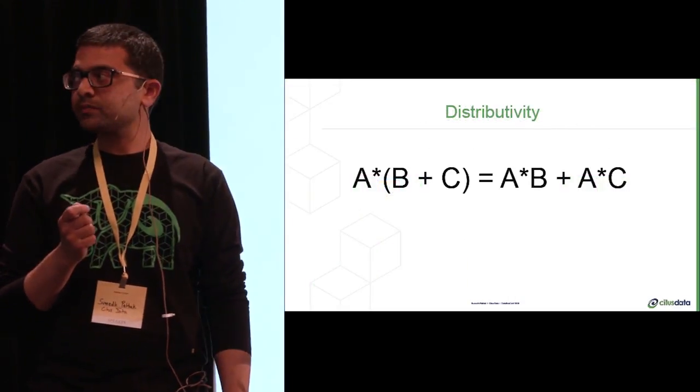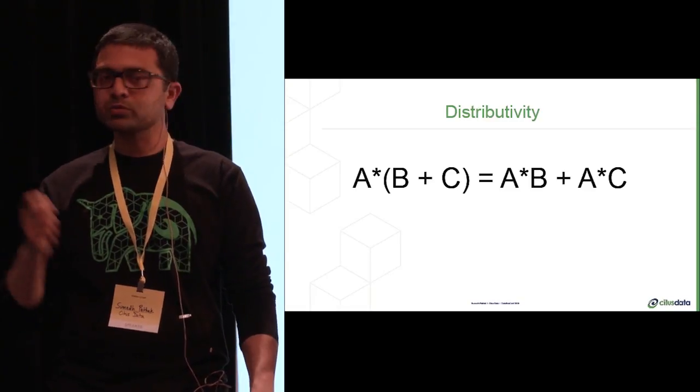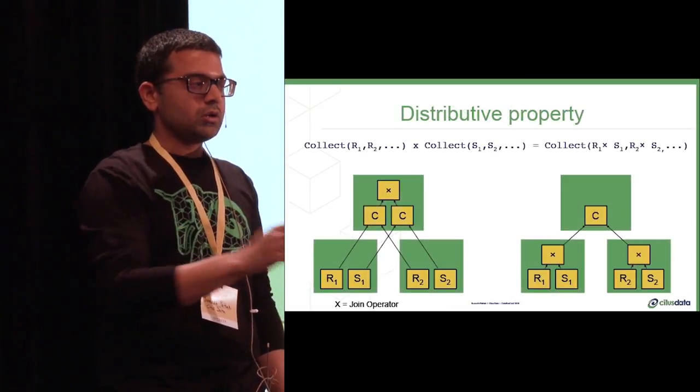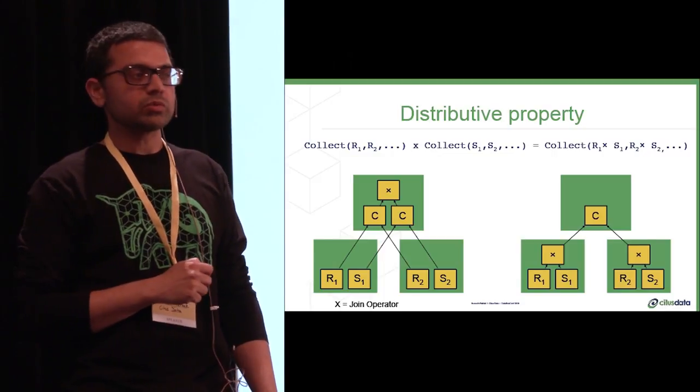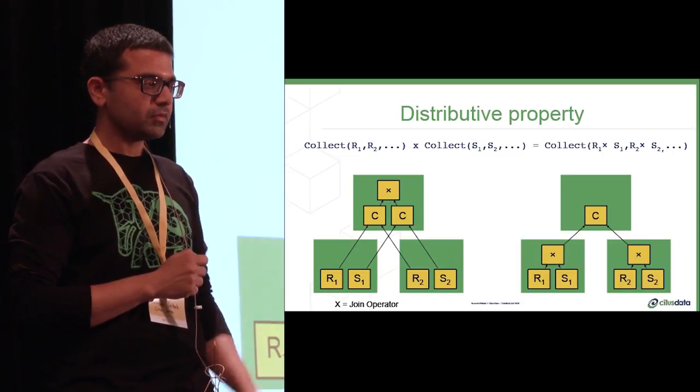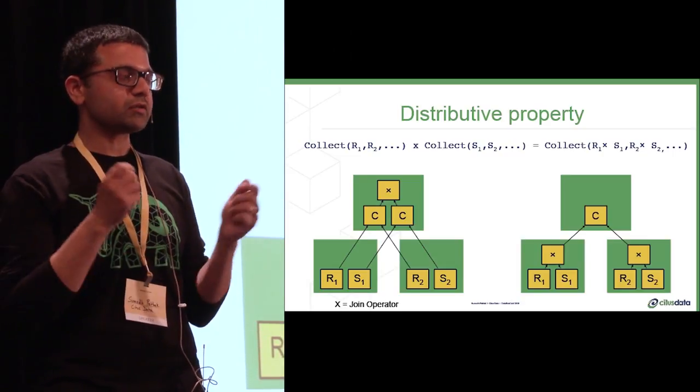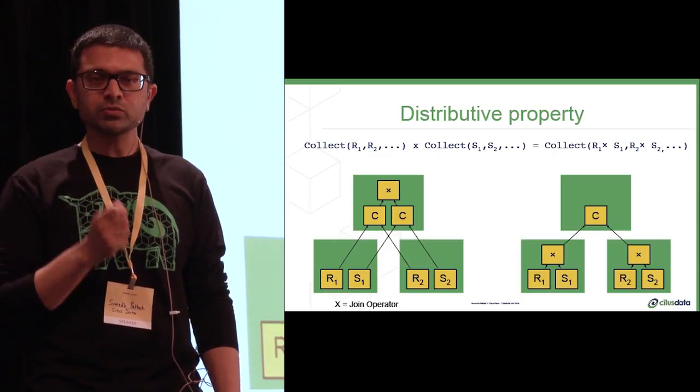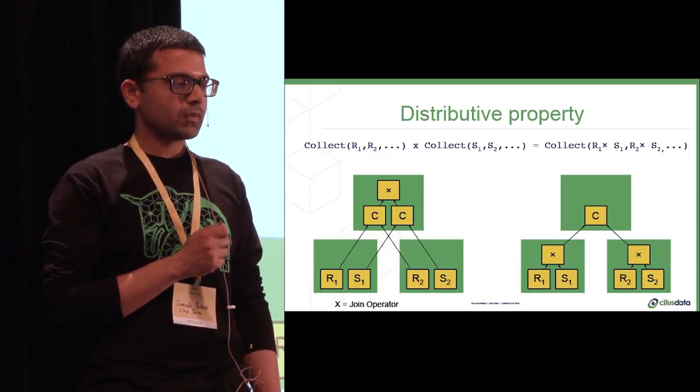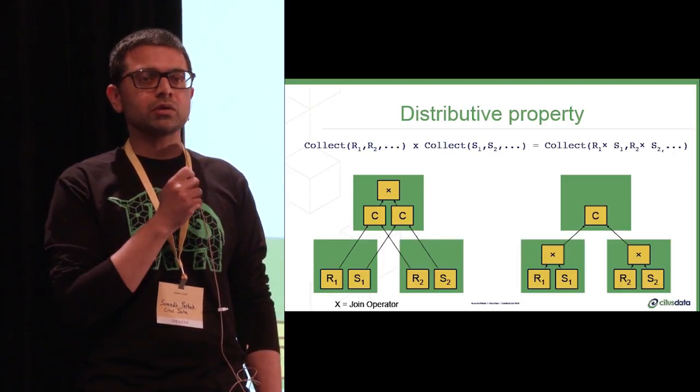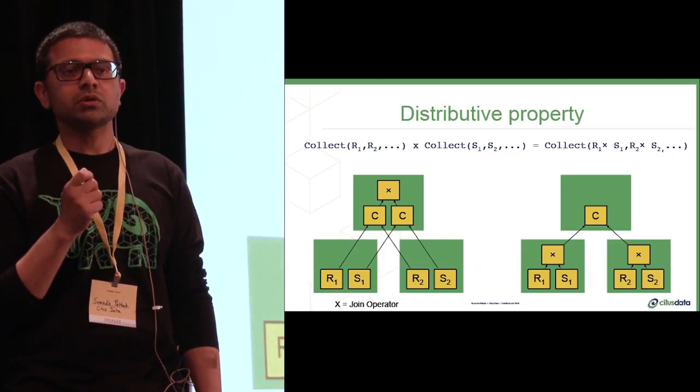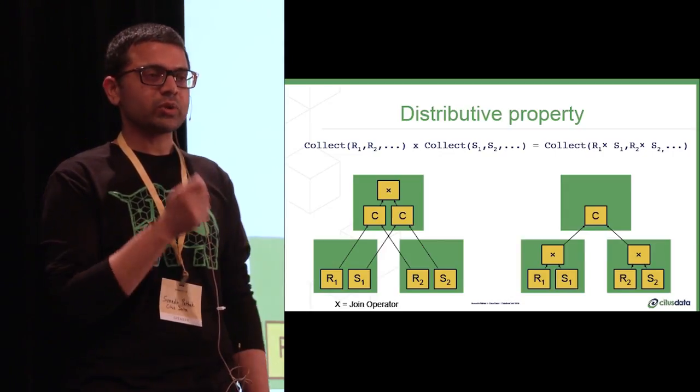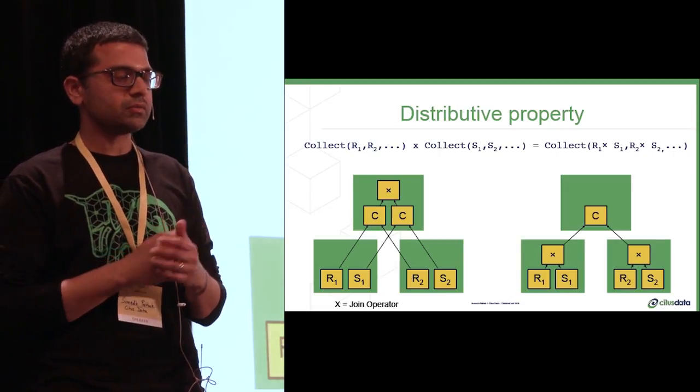You can also look at the distributive property. Again, in mathematical terms, this basically means I can distribute the multiplication across the addition. And how we can use it, let's look at if you're joining two large tables or two distributed tables. Again, the plan on the left is our original plan, right? So I can first collect both distributed tables onto one node and then just perform the join. But under certain scenarios, I can distribute the join across the collect operator. And what are those scenarios? Well, we talked about some of it a few slides back. For example, if I'm joining with a small or dimension table, or if my data is co-located and I'm joining on the tenant ID. In this case, now we can perform the join on each worker node and then only collect the results of the join.